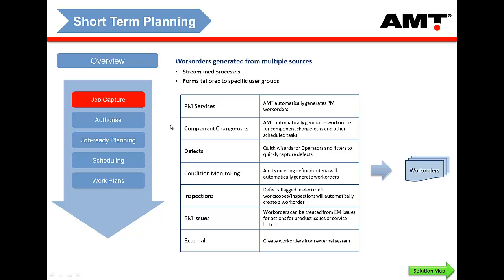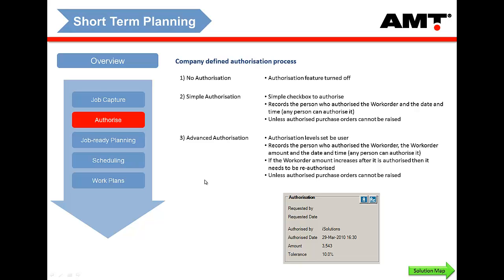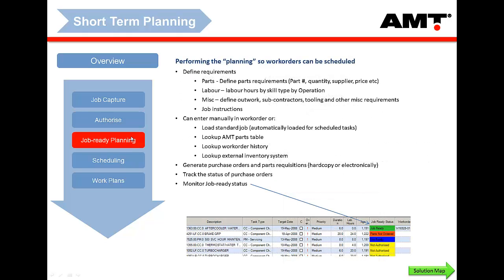The next step is that the planner ensures the job is correctly scoped and authorizes the work — for very large items, special authorization may be needed. The detailed job planning then really gets done within SAP. From AMT, once the user decides to perform the work, there's a button they click in AMT that will automatically create a work order within SAP and transfer across the parts listed and labour requirements listed within AMT.